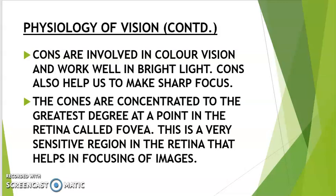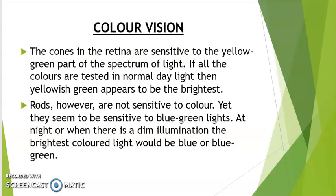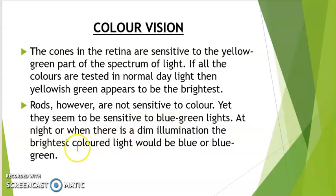Cones are involved in color vision and work well in bright light; they also help us achieve sharp focus. The cones are most concentrated at a point in the retina called the fovea, which is a very sensitive region that helps in image focusing. The cones in the retina are most sensitive to the yellow-green part of the light spectrum — in normal daylight, yellowish-green appears brightest. Rods are not sensitive to color, but appear sensitive to blue-green light. At night or in dim illumination, the brightest perceived light would be blue or blue-green.